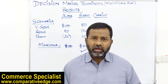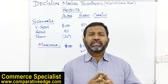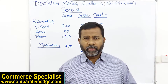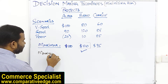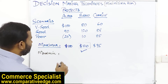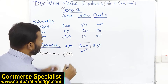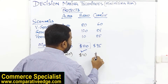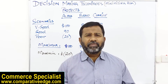Our next decision criteria is Maximin. There are managers who are very risk averse — they just don't want to get into any risky situation. Under Maximin, I again look at each project vertically. For Alpha, the minimum is a loss of $20. For Bravo, the minimum profit is $10. For Charlie, the minimum profit is $60.